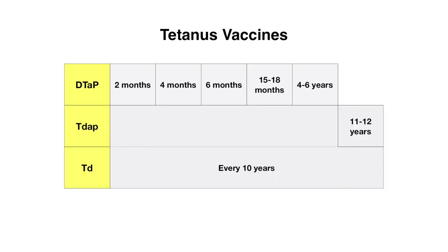In terms of the tetanus vaccines: at two, four, and six months of age, babies receive the DTaP vaccine — diphtheria, tetanus, and pertussis. They also receive booster doses at 15 to 18 months and at four to six years. The Tdap vaccine, which covers the same diseases but is a different variation, is given at 11 to 12 years. From there, every 10 years, patients receive the Td vaccine. As long as the patient was fully vaccinated as a child, it's very unlikely they did not receive at least three doses of the tetanus vaccine.